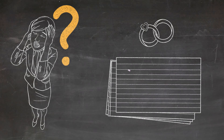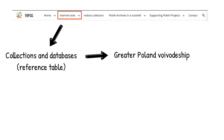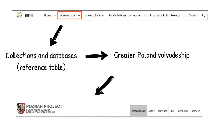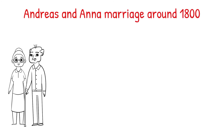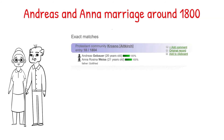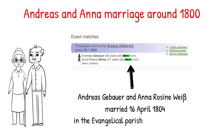Let's check to see if we can find a database with indexed marriages for that area. We will look again at the reference table on the FBPGG website for Greater Poland Voivodeship. It indicates that the indexed marriage records are likely included in the Posen Project database. Once we open this database, we input the groom and bride's names, narrow the time frame, and press search. We are lucky — the result shows a marriage of Andreas Gebauer and Anna Rosine Weiss, married on 16 April 1804 in the Evangelical parish of Krosno Alkerk. For finding the actual records, check the tutorials on the FBPGG website.